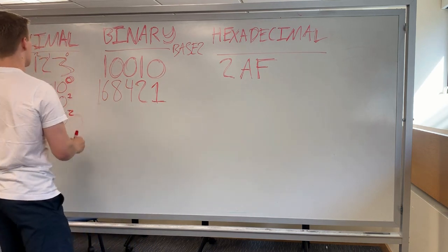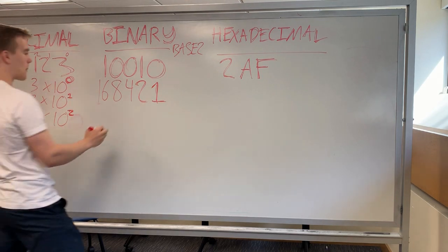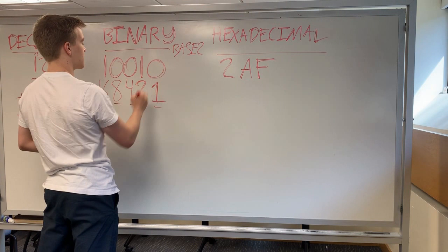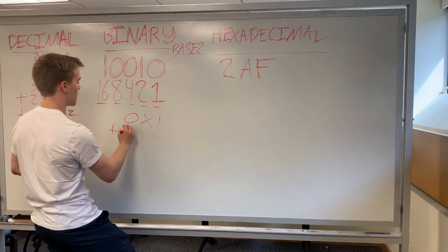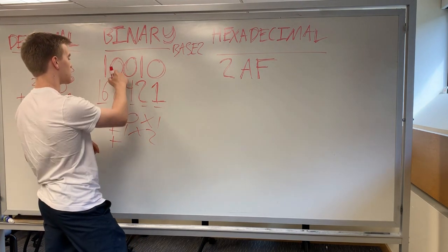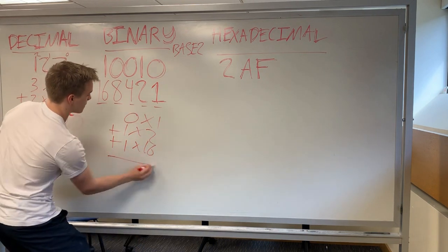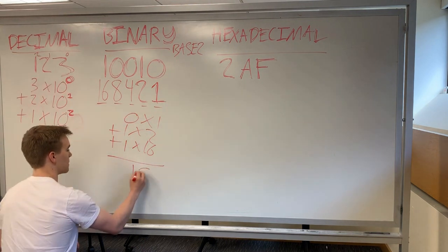Over here, this is the 1's, the 10's, the 100's, 1,000, 10,000, etc. So if I were to calculate this out, this would be 0 times 1, plus 1 times 2, plus 0 times 4, 0 times 8, 1 times 16, and that gives me, 2 plus 16 gives me 18.